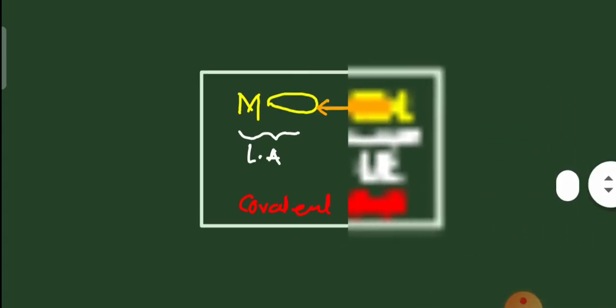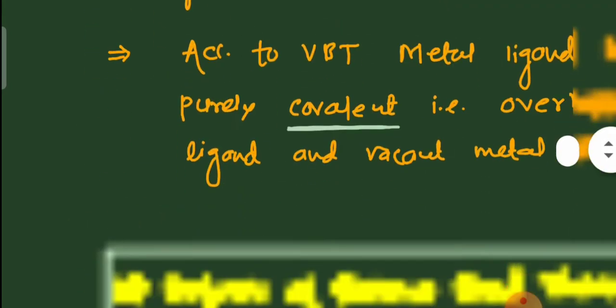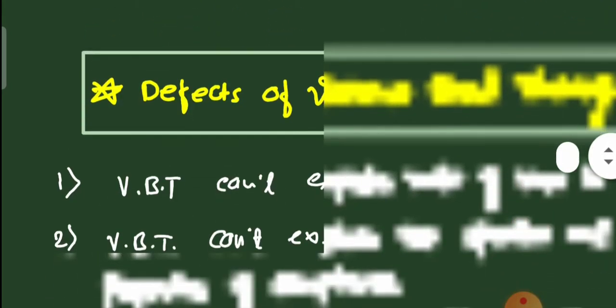In valence bond theory, the ligand is treated as a Lewis base because it is a lone pair donor, while the metal acts as a Lewis acid — a lone pair acceptor — forming a coordinate covalent bond. These are the postulates of valence bond theory. Now we will learn about Crystal Field Theory.